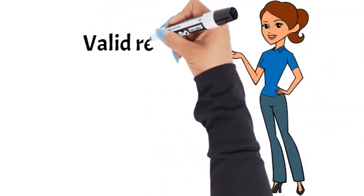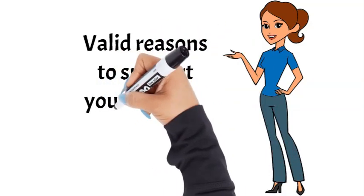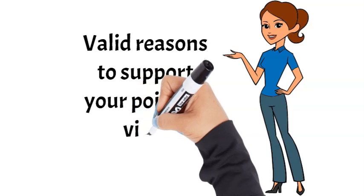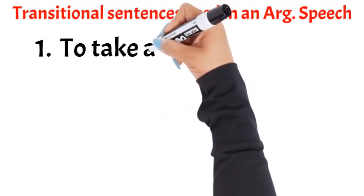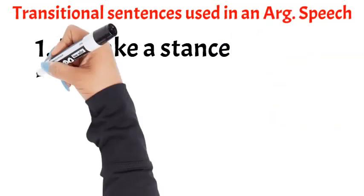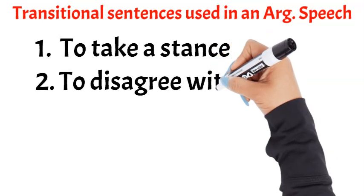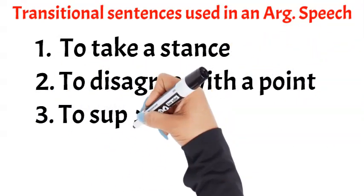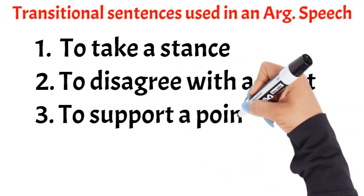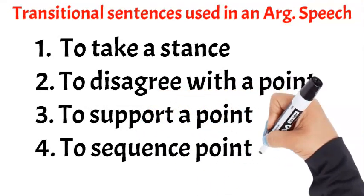Because the vital role of an argumentative speaker is having valid reasons to support the ideas. And it's also very important to know what sentences we are going to use to support our ideas. I'm going to give you four areas. For instance, these are those situations when you are arguing and you are supporting your ideas with them. And these situations are: to take a stance, to disagree with a point, to support a point, or to sequence a point.